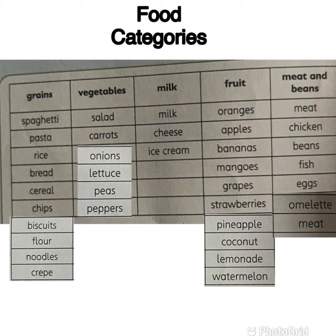Let's go to milk category. Apa yang dibuat daripada susu? For milk, they can turn into cheese and also ice cream. Pronounce: milk, cheese, ice cream.